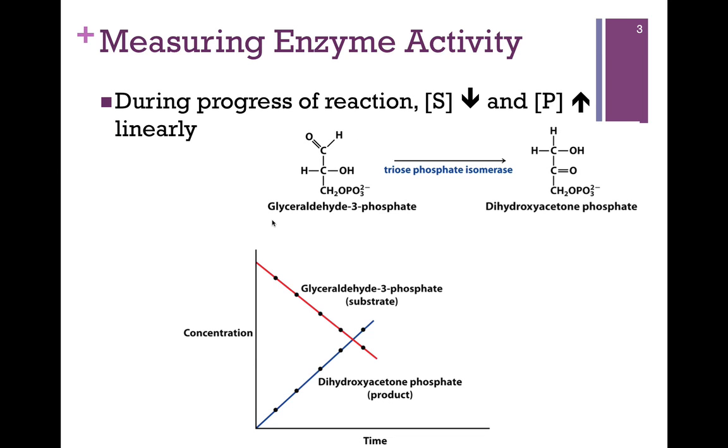During the progress of a reaction, we'll find that substrate concentration will decrease and product concentration will increase, and this will be in a linear fashion. Here we have the example of triose phosphate isomerase. It catalyzes the conversion of glyceraldehyde 3-phosphate to dihydroxyacetone phosphate, so a simple case where we have one substrate and one product. If we follow the concentration of these over time, we find the substrate concentration does decrease in a linear way, and the product increases within the same amount of time.